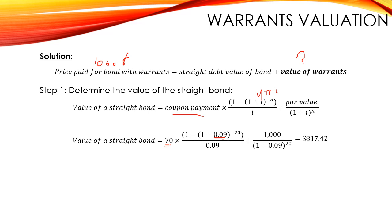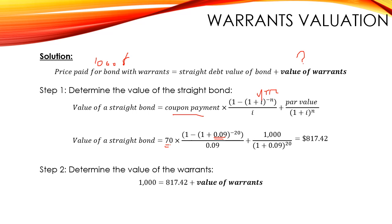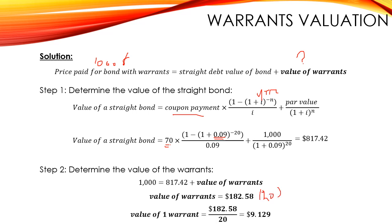The second step is to determine the value of the warrants. Since $1,000 equals $817.42 plus the value of the warrants, the value of all 20 warrants is $182.58. The value of one warrant is $182.58 divided by 20, which equals $9.129.